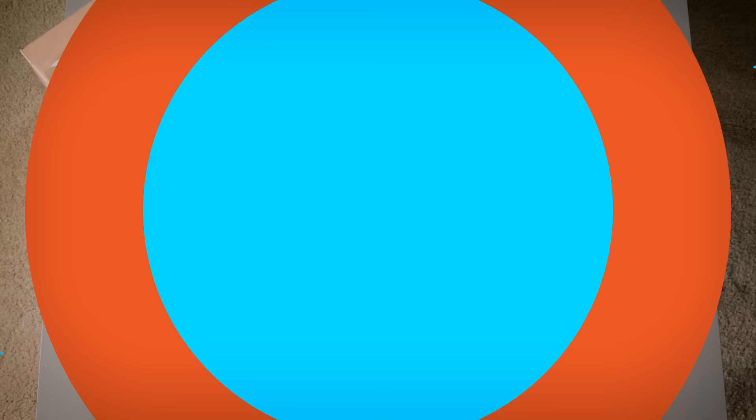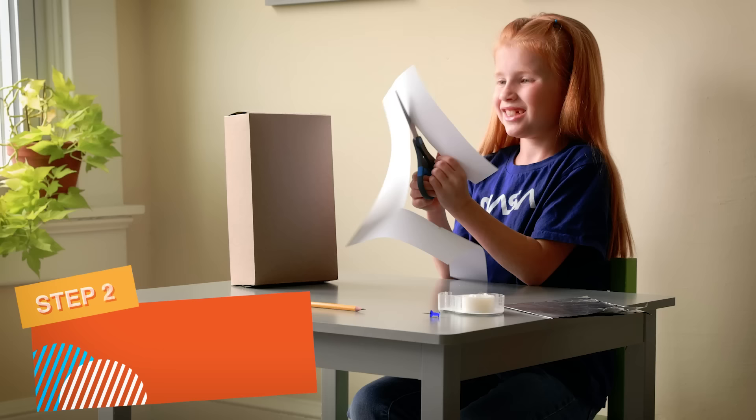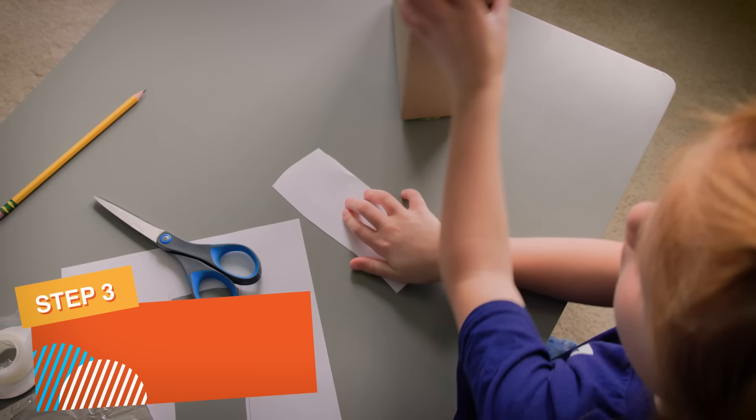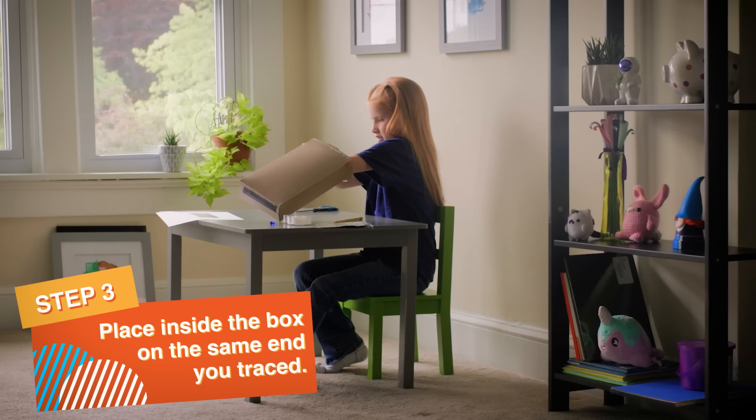Start by tracing one end of the box on the white sheet of paper. Then cut out your shape and place it inside the box on the same end you just traced.